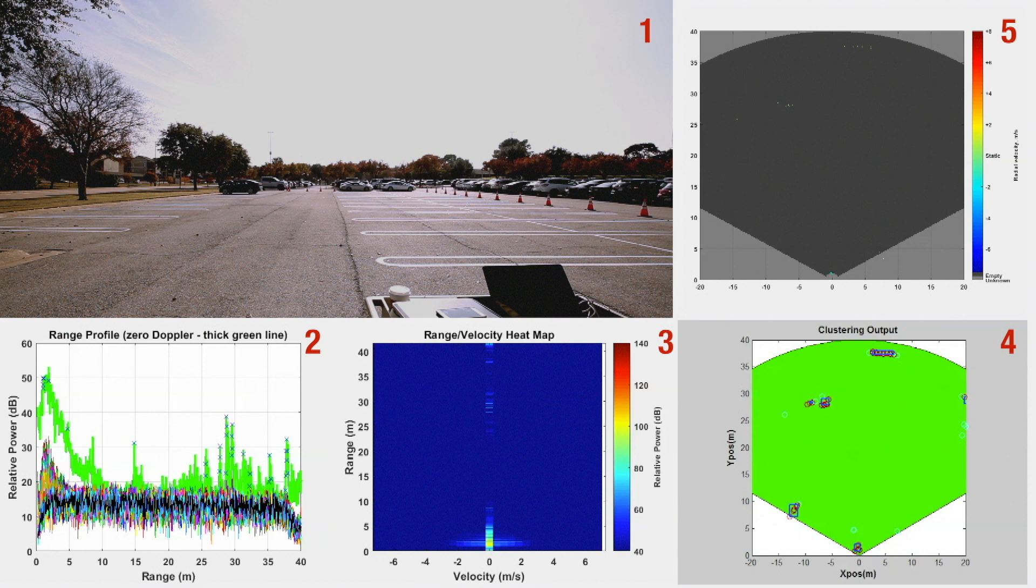Plot 5 indicates an occupancy grid with incorporated velocity information. The grid covers plus or minus 20 meters horizontally and 40 meters vertically, with a cell size of 10 centimeters by 10 centimeters. The color of the occupied cell indicates the radial velocity.